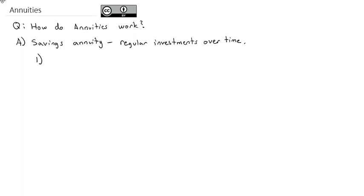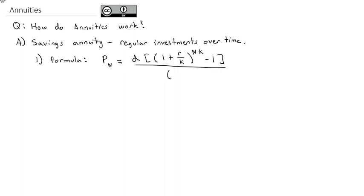The formula for the savings annuity looks a little ugly, but once you understand the pieces of it, it's just plugging in the numbers we need and solving on our calculator. The formula for a savings annuity is: the final amount or future value is equal to the regular deposits times, in parentheses, one plus the interest rate divided by the number of compounds or deposits, raised to the N times K power, minus one, all divided by the interest rate divided by the number of compounds. That is the big formula for a savings annuity — making regular investments over time.